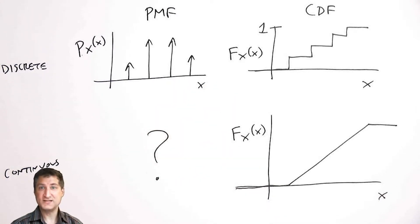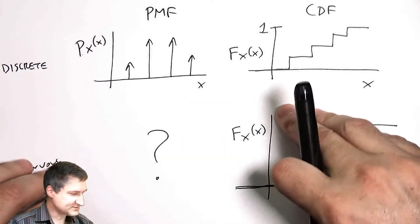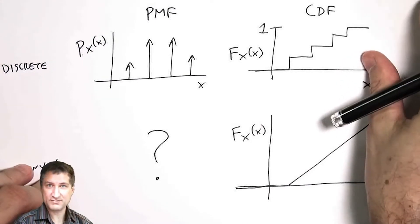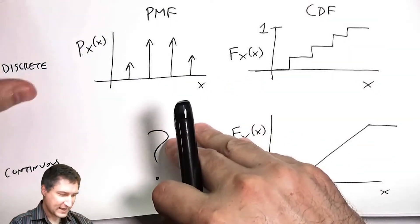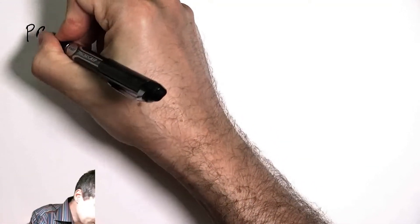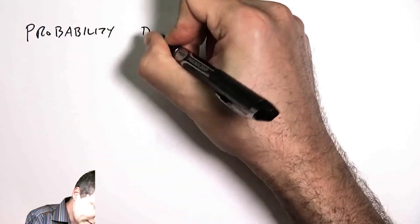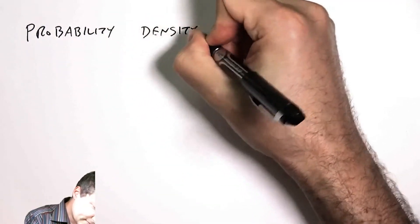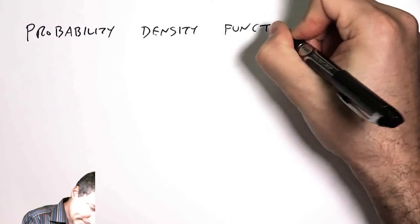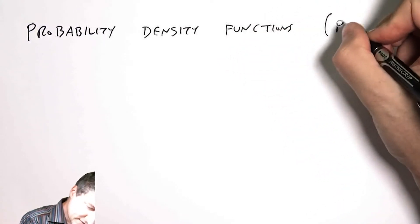What goes here? What is the corresponding thing for a PMF when we have a continuous random variable? Well, that's today's topic. It's called a PDF, probability density function. This is the easiest way to define a random variable, by looking at its PDF.